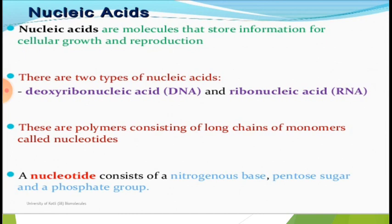There are two types of nucleic acids. Generally, we have said that nucleotides are the monomers and the basis of nucleic acid.